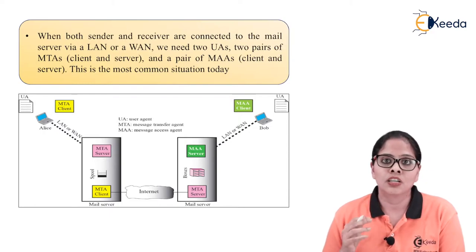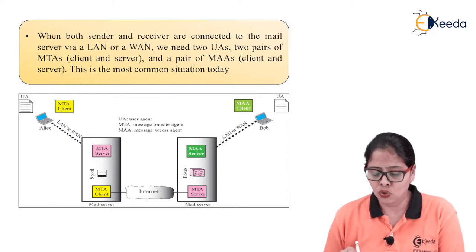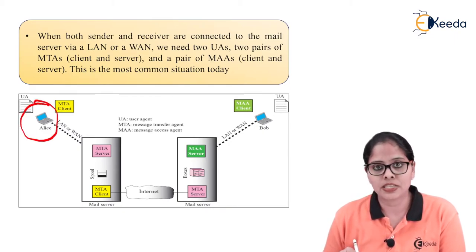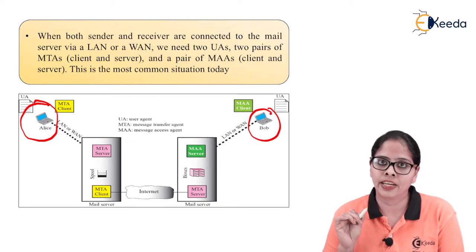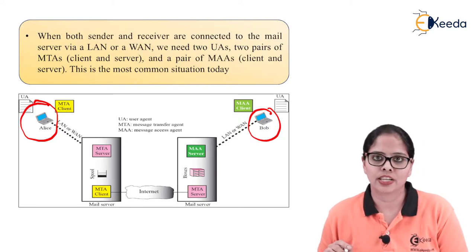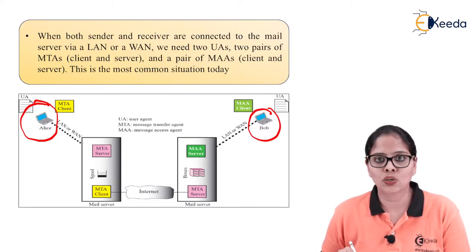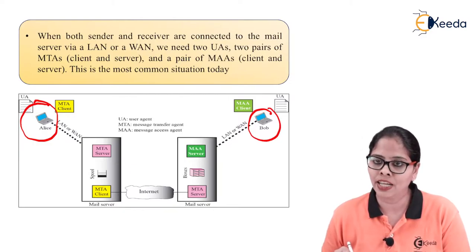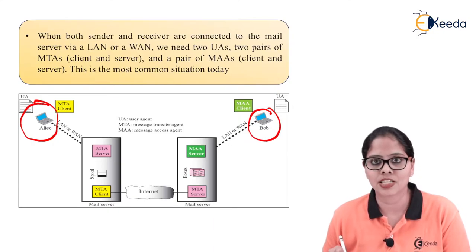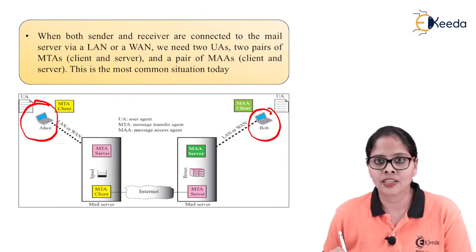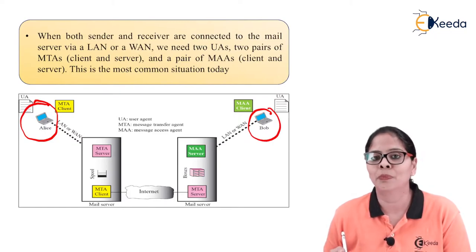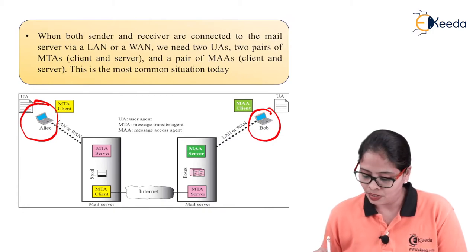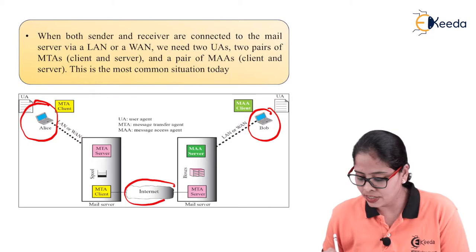Both sender and receiver are connected by LAN or WAN to their mail server. Alice writes the mail with the help of the user agent. Once the mail is created, from the PC it should be sent to the mail server. For that, you need the MTA client which will push the message and the MTA server which will receive it. Then it is forwarded to the mail server, and another pair of MTA client is needed to push that mail from Alice's mail server to Bob's mail server. The internet is needed to connect the two mail servers.